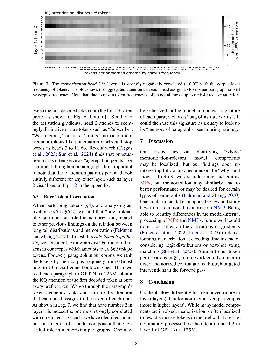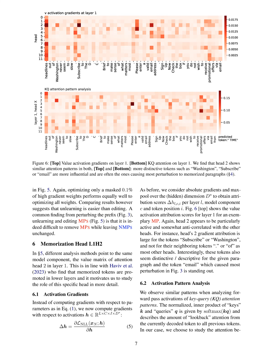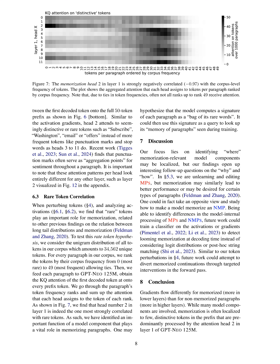The role of Attention Head 2 in Layer 1, according to the findings, is that it attends predominantly to distinctive or rare tokens in the long tail of the unigram token distribution. This head is particularly active and somewhat anti-correlated with the other heads. It shows a large gradient attribution for tokens that are unique or rare, such as 'subscribe', 'Washington', 'email', or 'offers', rather than common tokens like punctuation marks and stop words. This head is identified as the one most strongly correlated with rare tokens, implying that it may help the model create a unique signature for each paragraph based on its rare words, which could then be used as a query to recall memorized paragraphs during training.